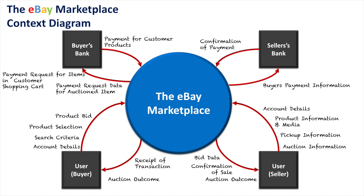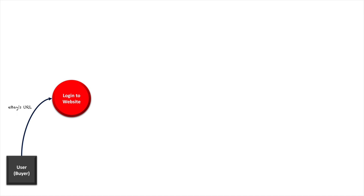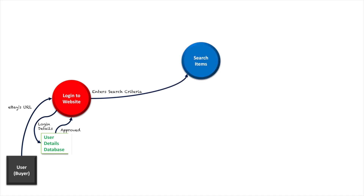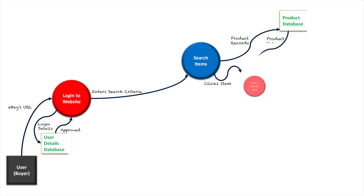In the data flow diagram, we have the user entering eBay's URL to go to their website, then logging into the system and being approved — we've seen this many times before with many systems. Once they've logged in, they can begin searching products. They enter their search criteria into a text box and type in what they want to look for. When they search items, it goes against eBay's database of all their products. They can then view items, extracting that information and viewing specific items by clicking on them to see the product's data.